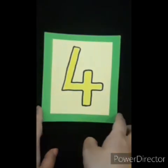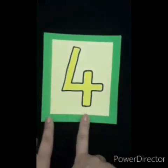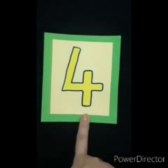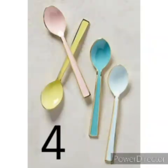So children, now look which number is this? This is number 4. Now, can you tell me what are these? These are spoons. How many spoons are there? Let's count. 1, 2, 3, 4. 4 spoons.